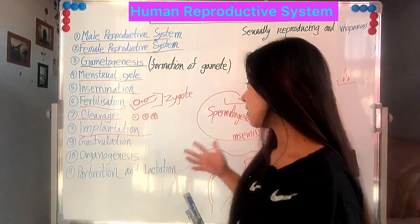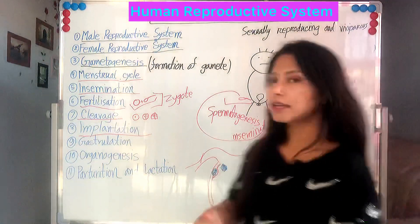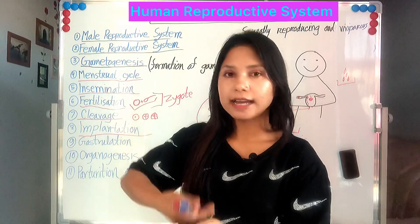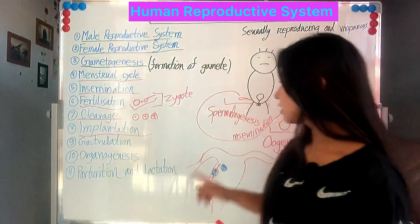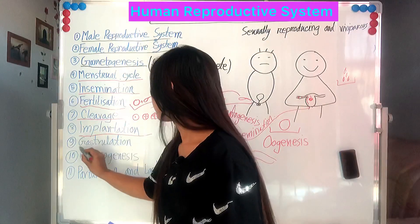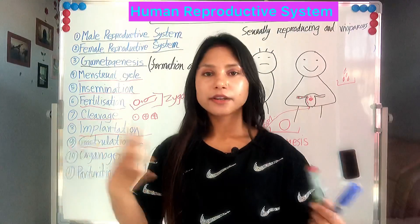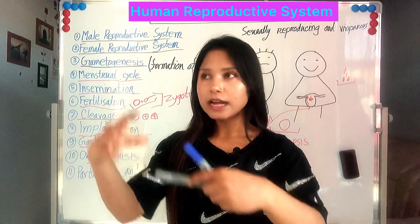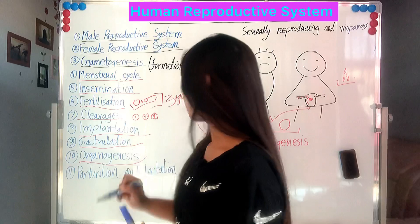After implantation, it will make a placenta and start forming three cell layers: ectoderm, endoderm, and mesoderm. That process is called gastrulation. Then it will make different organs and body parts and turn into a baby — that process is called organogenesis.